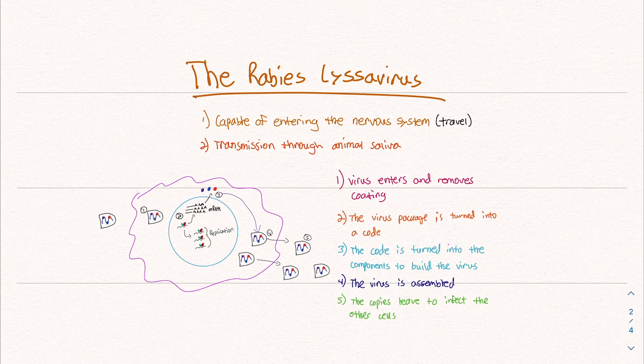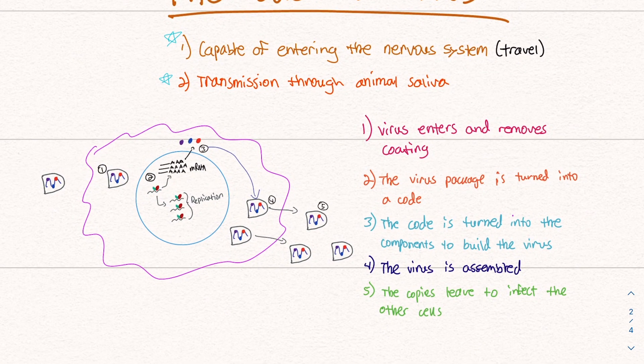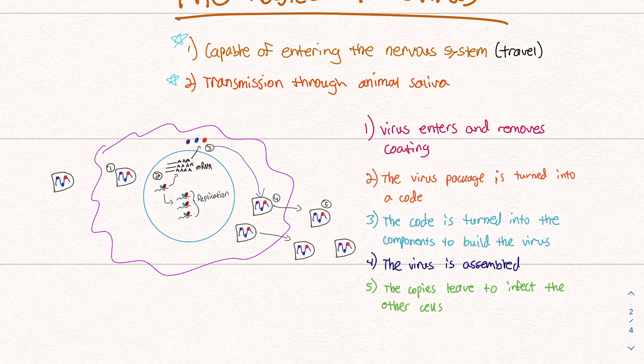Let's briefly discuss how this works. So it's capable of entering the nervous system, which is where you get the encephalitis — that's kind of where it travels. It's transmitted through animal saliva, so if an animal bites you and the saliva gets in the wound, you'll probably have rabies if they have rabies and haven't been vaccinated. So the whole goal of every virus is to infect the host cell, copy itself into other viruses, leave the host cell, and go to infect other cells.